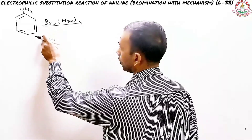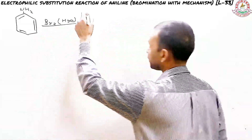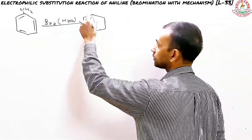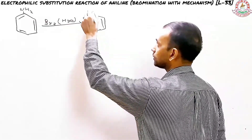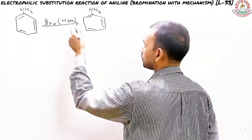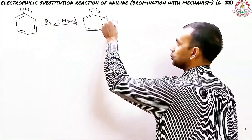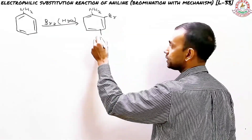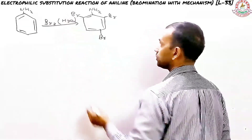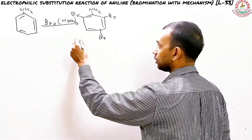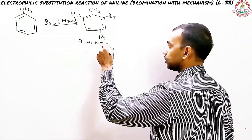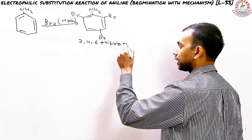When there is plenty of bromine present, the product coming out has bromine at three positions: the first bromine here, the second bromine here, and the third bromine right here. This product is called 2,4,6-tribromoaniline.